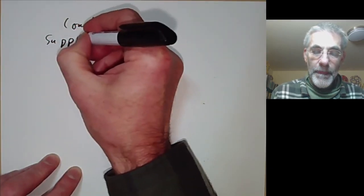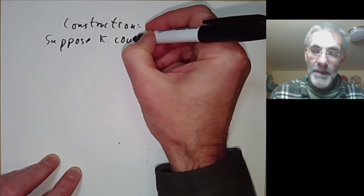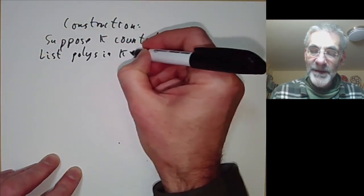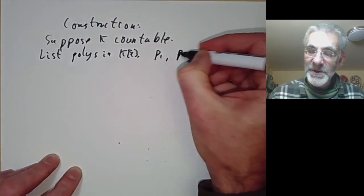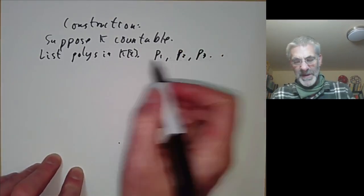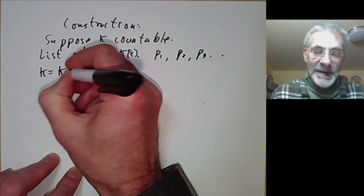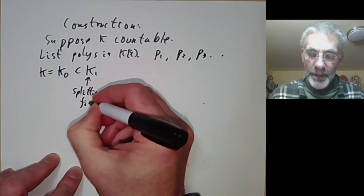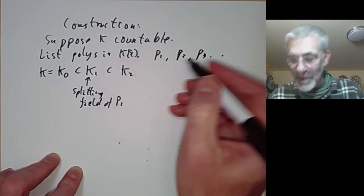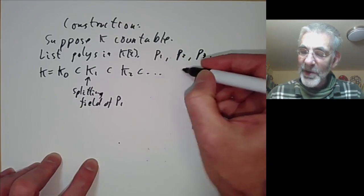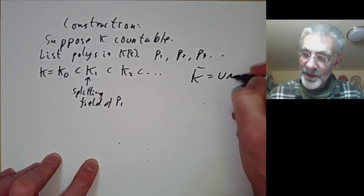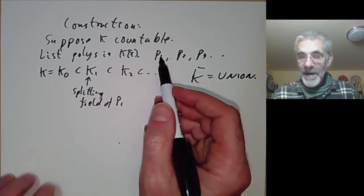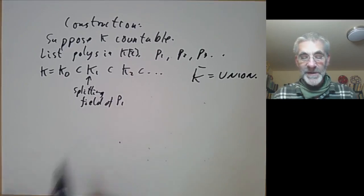Let's first suppose the field k is countable. Then all we do is list the polynomials in k[x] — we might get p1, p2, p3 — and there are only a countable number of polynomials so we can just list them all in a row. Then we take k equals k0, extend it to k1 which is a splitting field of p1, then extend it to k2 which is a splitting field of p2, and we carry on like this and put k̄ to be the union. You can easily see that that's just a field and contains a root of any polynomial in k[x], so any polynomial in k[x] factorises into linear factors.